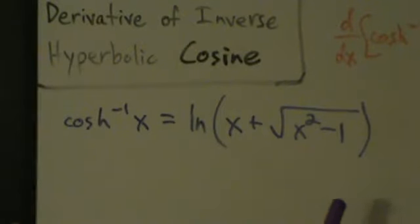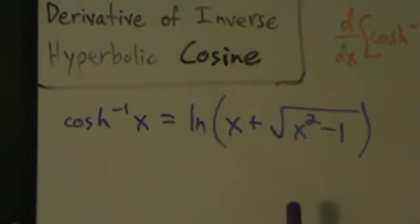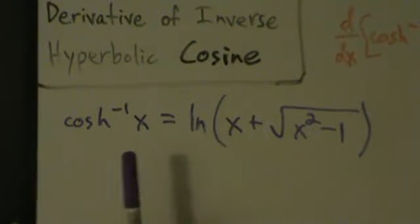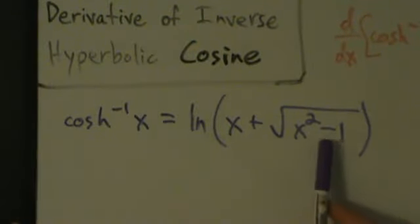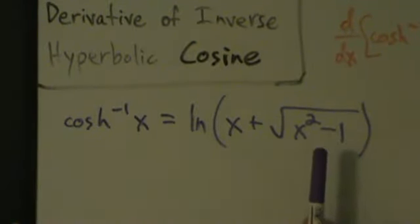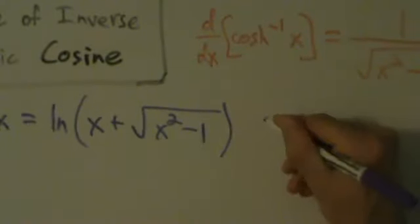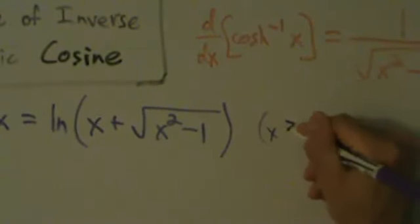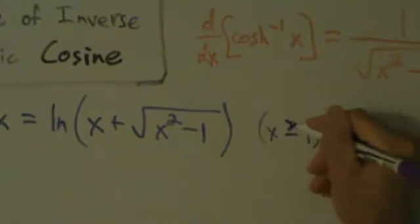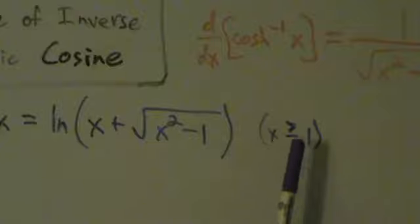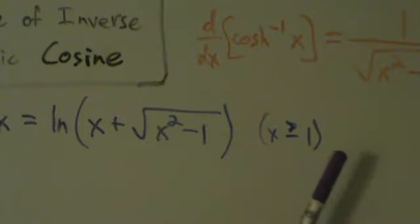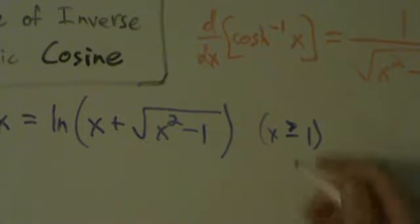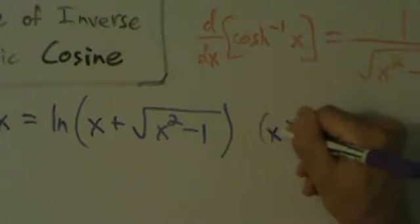Notice how similar this is to the definition of the inverse hyperbolic sine — for inverse hyperbolic sine, we had the same thing but with a plus sign instead of a minus. Also remember we have the restriction that x is bigger than or equal to 1. This restriction won't really come up in the calculations, but we do have to point it out just to be thorough.